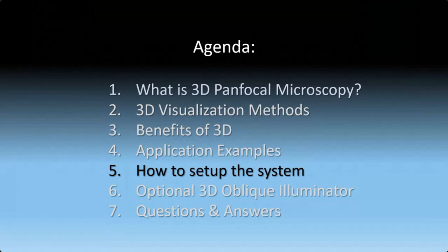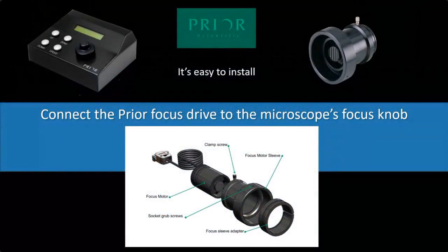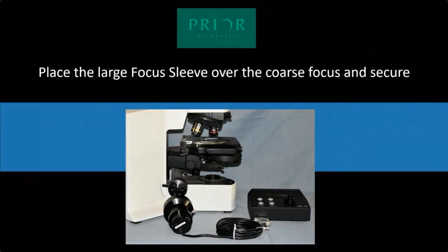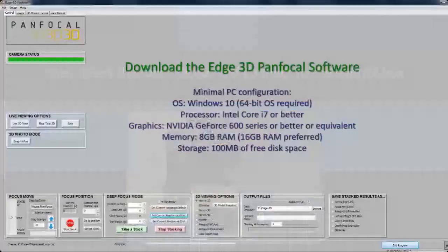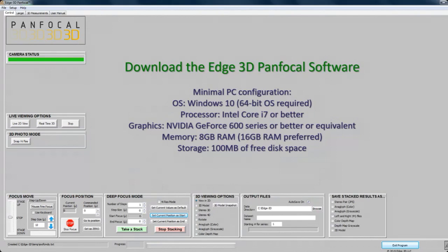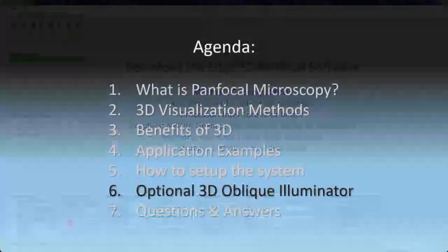Let's talk about how to set up the system — it's very easy. You start by connecting the Prior focus device to your microscope's focus knob. Here's a picture of it on an old Olympus microscope — you put it over the knob and tighten it down, then connect it to the software. You'll need a PC with Windows 7 or later, ideally Windows 10, and a good graphics card. The software interface controls the focus movement.